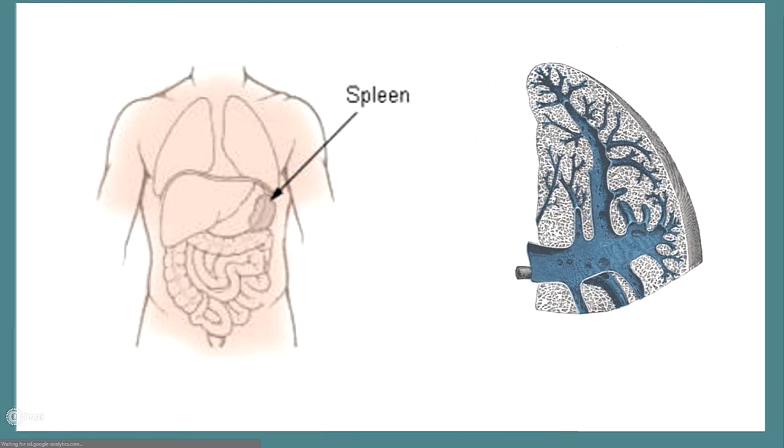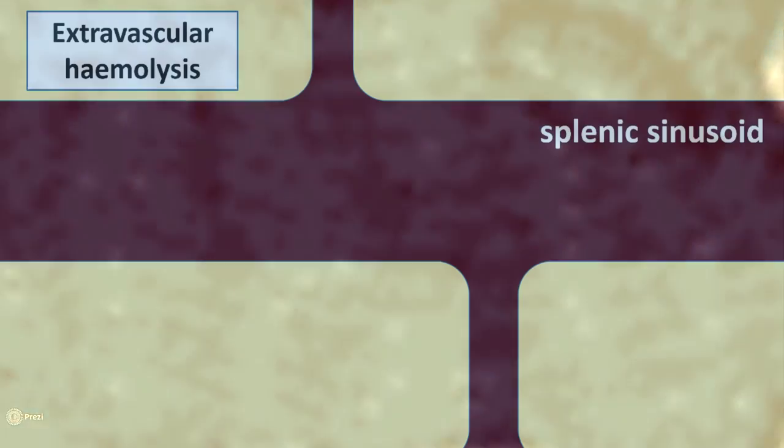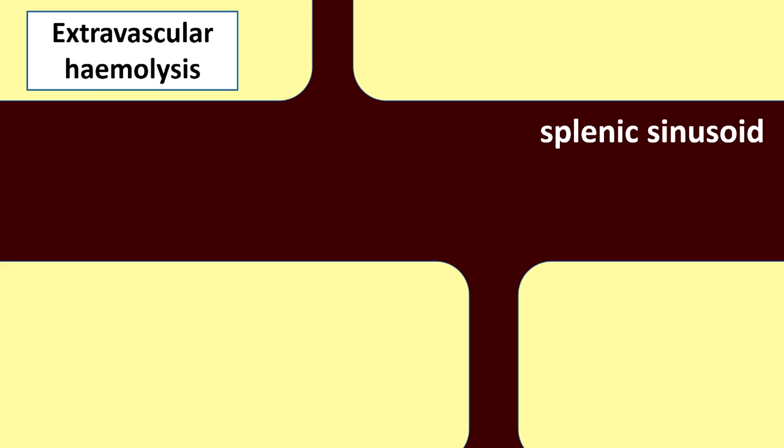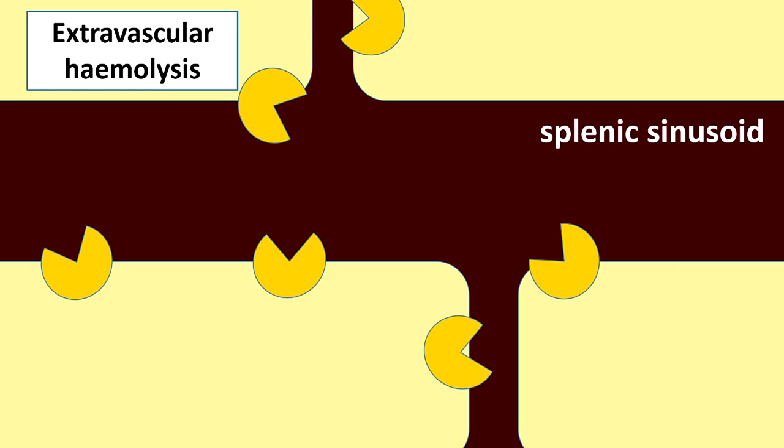In extravascular hemolysis what's happening is the cells are damaged and they're not really working very well and they're taken out of the circulation by macrophages, usually in the spleen. This is a normal part of the cell cycle anyway as red blood cells get a bit old and a bit knackered and not really working well. That's how they're taken out of the circulation by macrophages in the spleen.